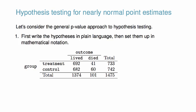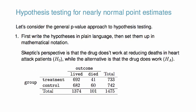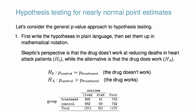First, write the hypotheses in plain language, then set them up in mathematical notation. In our example, one possibility is that the drug is not effective in reducing deaths in heart attack patients (H₀), while the alternative is that the drug does work (Hₐ). Mathematically, we write the null hypothesis is that the two proportions are the same, and the alternative hypothesis is that the control group will have a higher proportion of deaths than the treatment group. We assess this by considering the proportion of patients who died in each of the control and treatment groups.